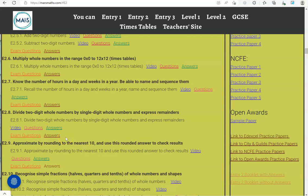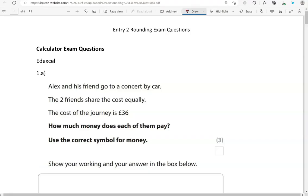In this video, we'll go through exam questions that cover the criteria: approximate by rounding to the nearest 10 and use this rounded answer to check results. You can locate the questions on the massmass.com website under Entry 2. The questions come from different exam boards. We normally start with the non-calculator questions and then do the calculator questions. However, there don't seem to be any non-calculator questions for rounding within this level, so we're going straight into the calculator questions.